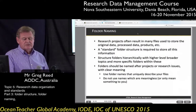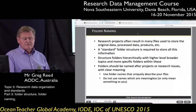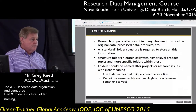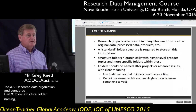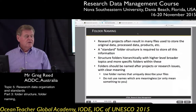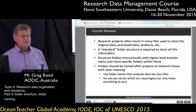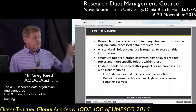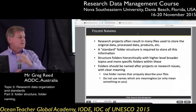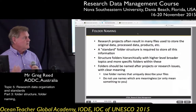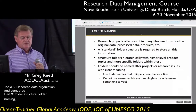Many research projects are going to result in a lot of files — many, many data files. You need to be able to store your original data, you need to be able to store your process data, and you need to be able to store your products, and it's a good idea to separate these. So you have a top-level folder for original data, another folder for process data, another one for products, so you know where to go to look for the different types of data.